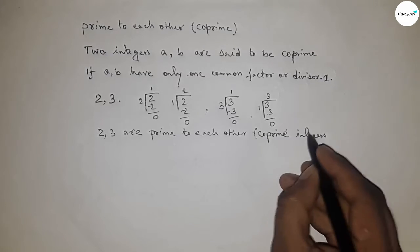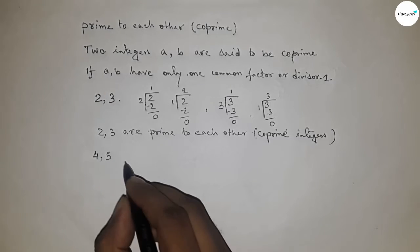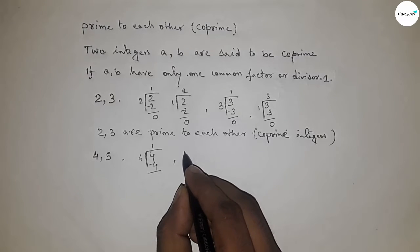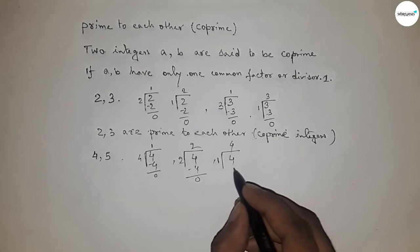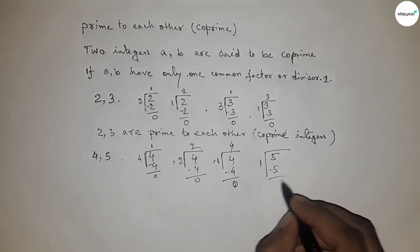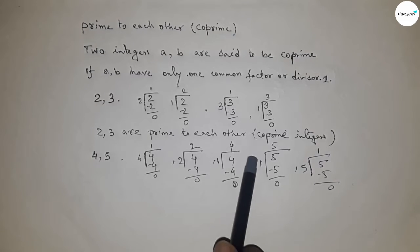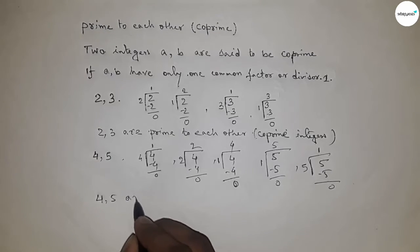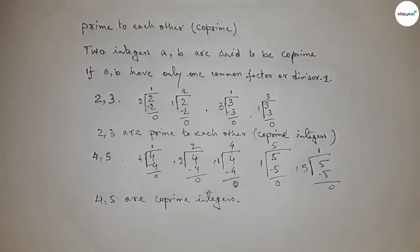Taking another example: 4 and 5. Four can be divided by 4, 2, and 1. Five can be divided by 5 and 1. From both, we get only one common divisor, which is 1. So 4 and 5 are also co-prime numbers.